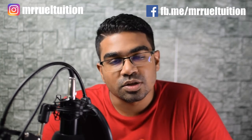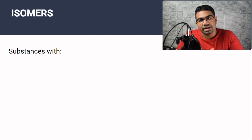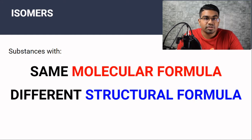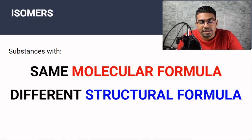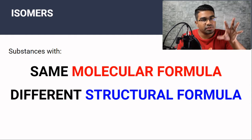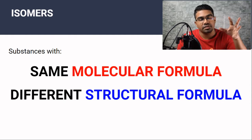Before we get into the isomers of pentane, let's find out what isomers are. Isomers are substances that have the same molecular formula but different structural formula. The molecular formula tells us the exact number of atoms of elements in a compound. So isomers would have the exact same number of atoms of the same elements, however these atoms will be arranged differently in space — they will have a different structure.